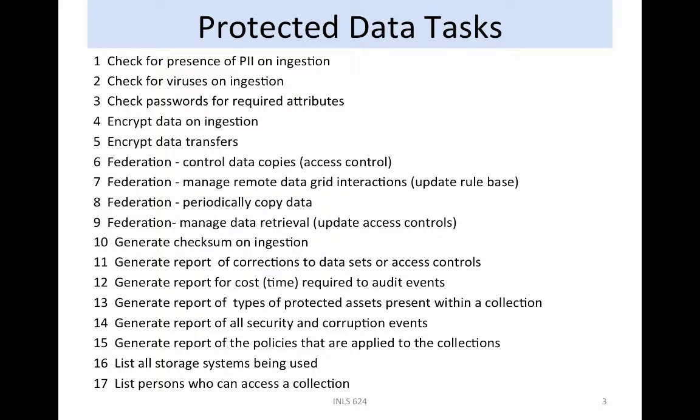The first 17 protected data tasks are listed here. The tasks included not only controls on the processing of the data, such as encryption of protected data, but also controls on the integrity of the data, such as checks for viruses. The controls needed to extend to groups that access the data through federations. If the data are used at multiple sites, the access controls have to be applied uniformly across the sites.